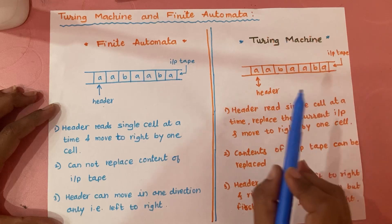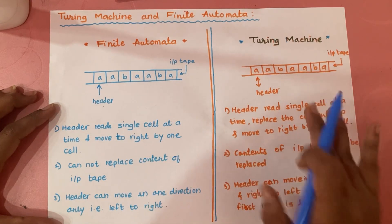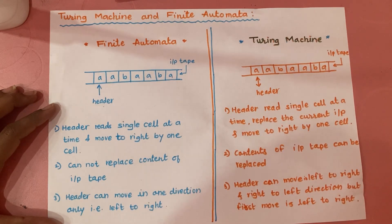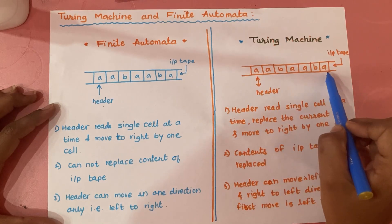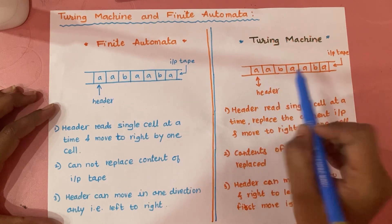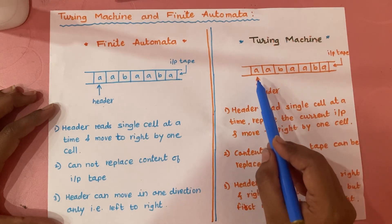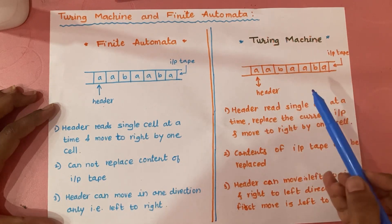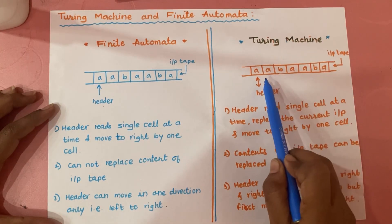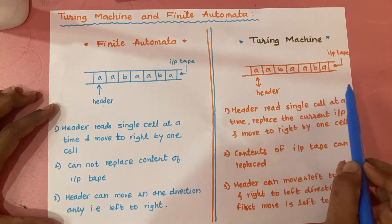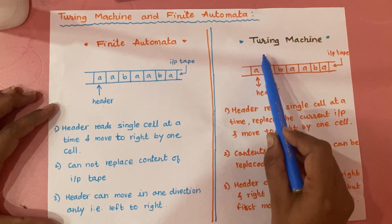That replacement is possible in case of a Turing machine. So let's compare finite automata with Turing machine. In case of a Turing machine, we have an input tape on which the input symbols are written and they are read by the input header. The header reads a single symbol at a time from the input tape, and then we can replace the content of the tape, and the header will move to the right by one cell.